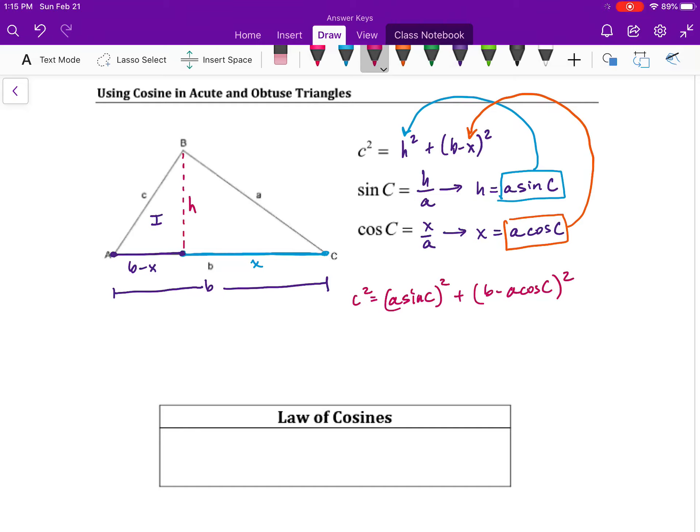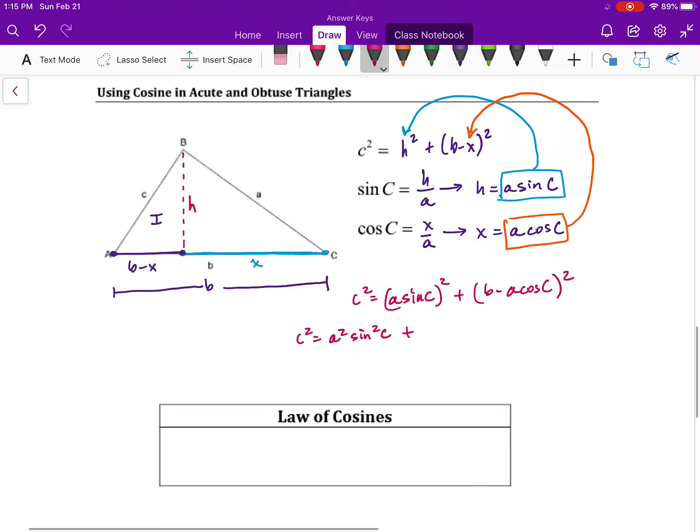But we're going to square A sine C. So C squared is equal to A squared sine squared C. We're going to FOIL B minus A cosine C, getting B squared minus 2AB cosine of C plus A squared cosine squared C.